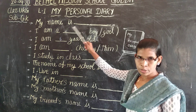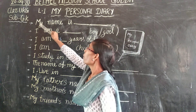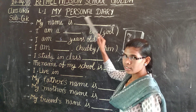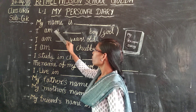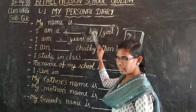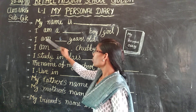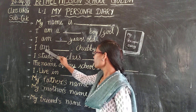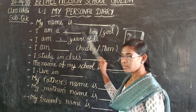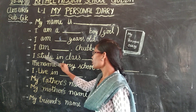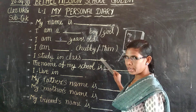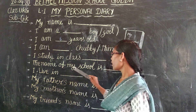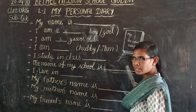Now children, you have to read after me. My name is Gita. I am a boy or a girl. I am six years old. I am chubby or thin. I study in class UKG. The name of my school is Bethel Mission School.